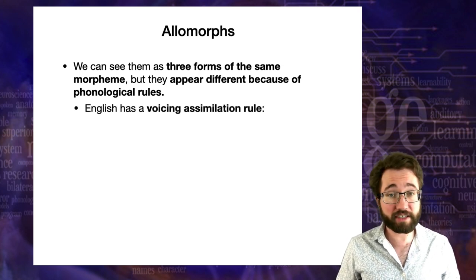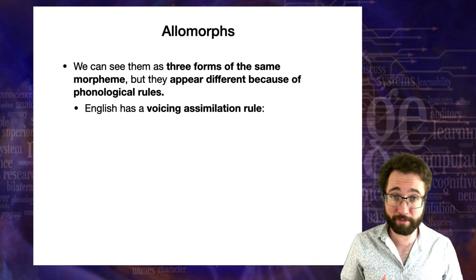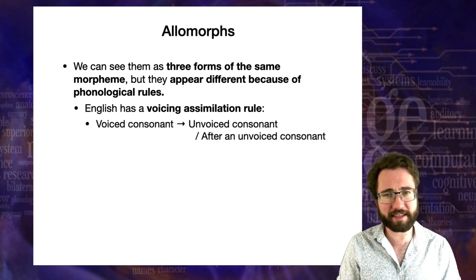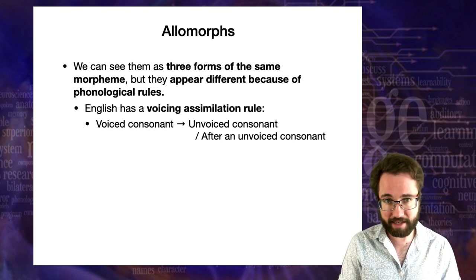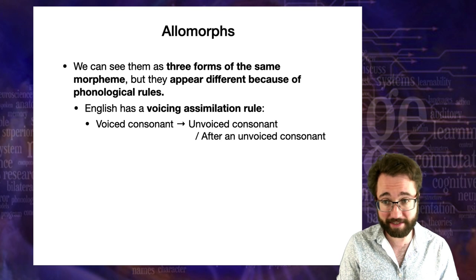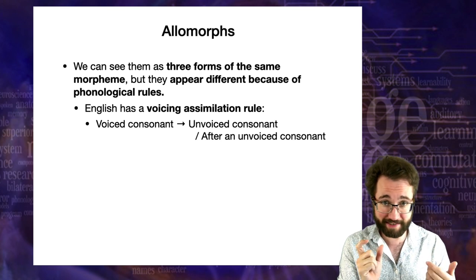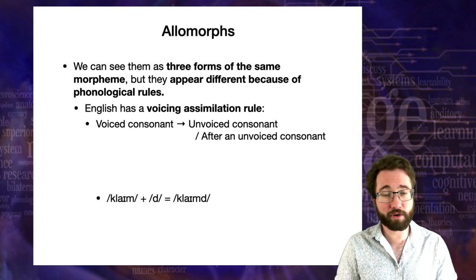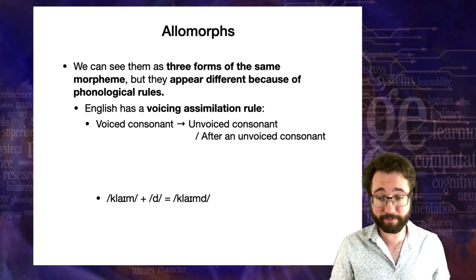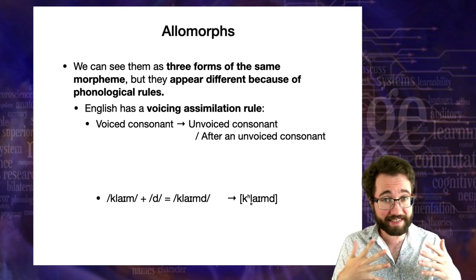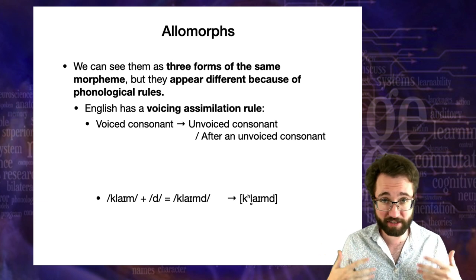In particular, English has a voicing assimilation rule: a voiced consonant is expressed as an unvoiced consonant when it appears after an unvoiced consonant. This is an assimilation rule — a voiced consonant coming after an unvoiced consonant acquires that unvoicedness from what came before it. So when we have 'climb' plus the phoneme D, the D is coming after an M, which is voiced, so the voicing assimilation rule doesn't apply to it.